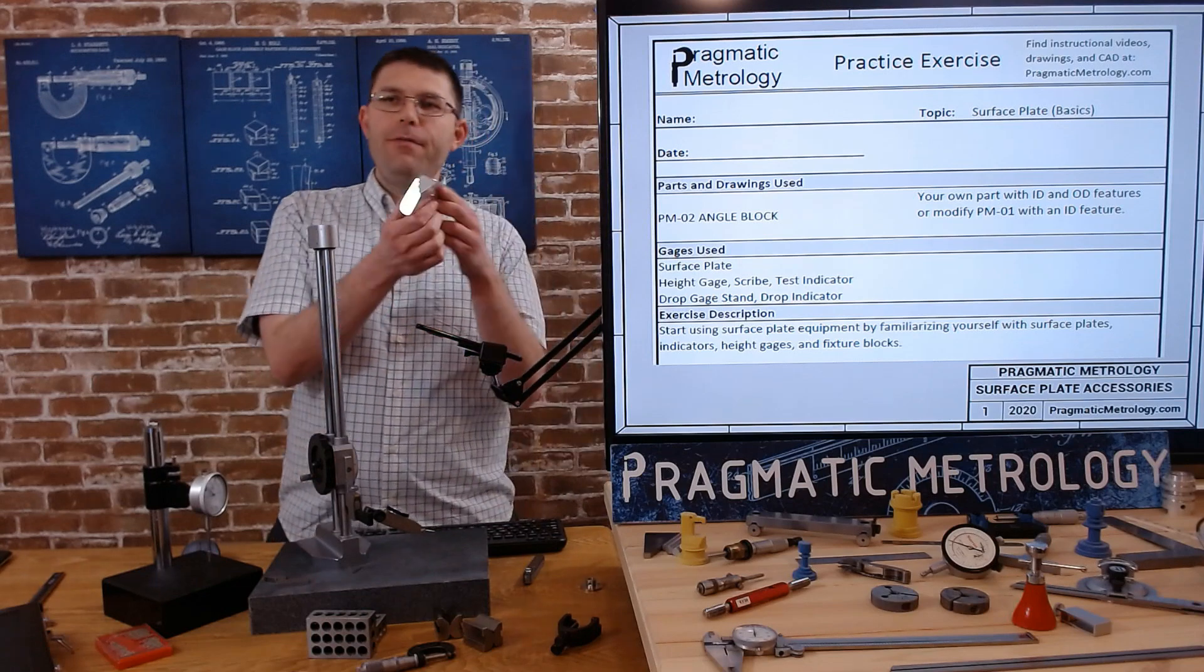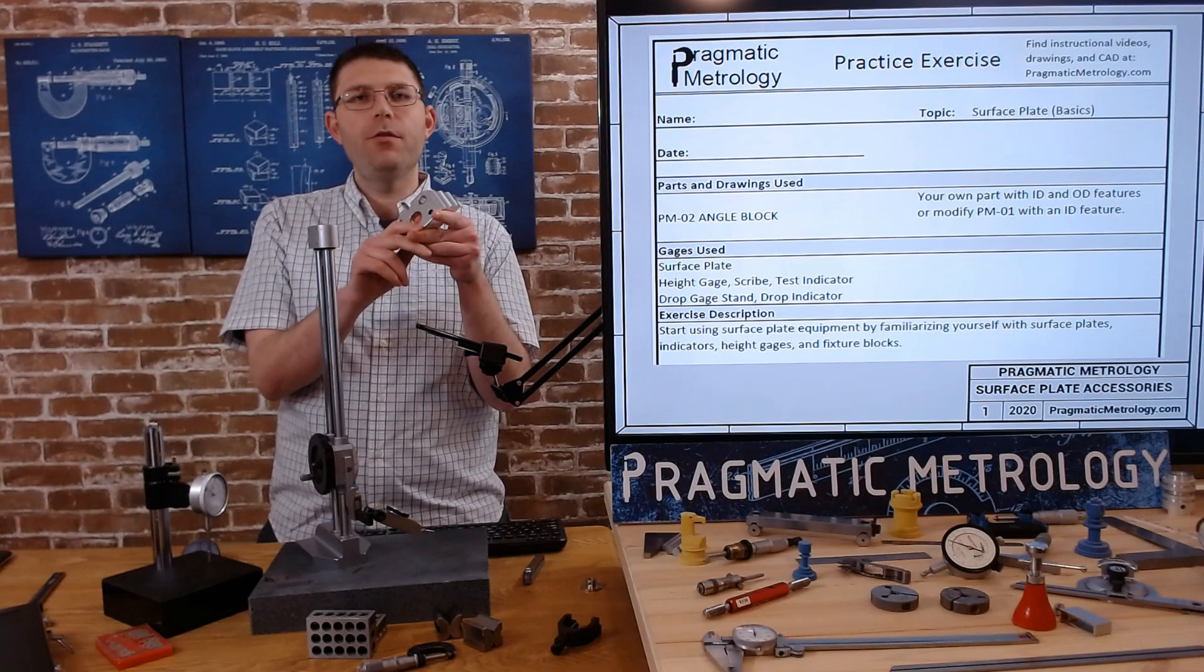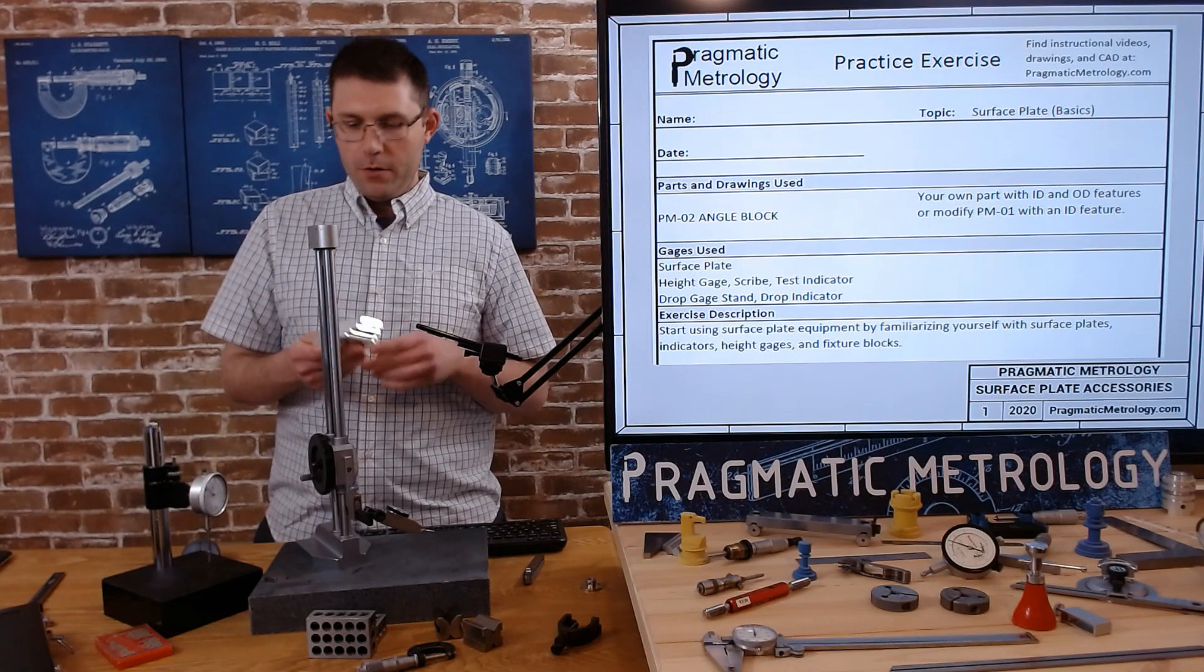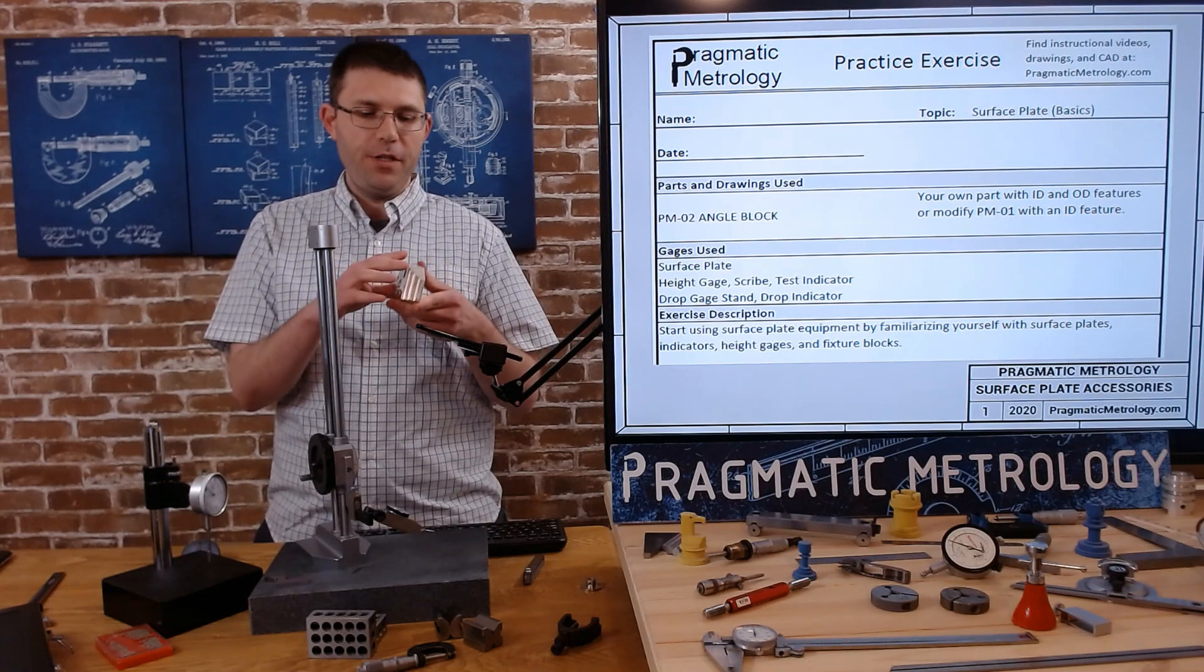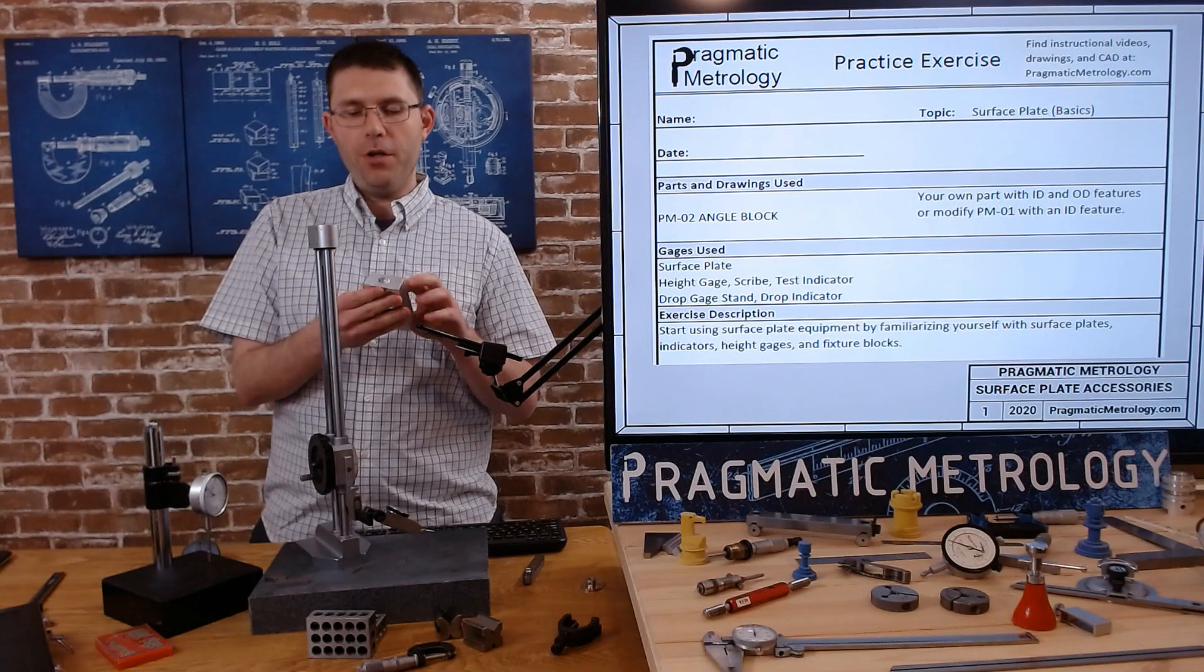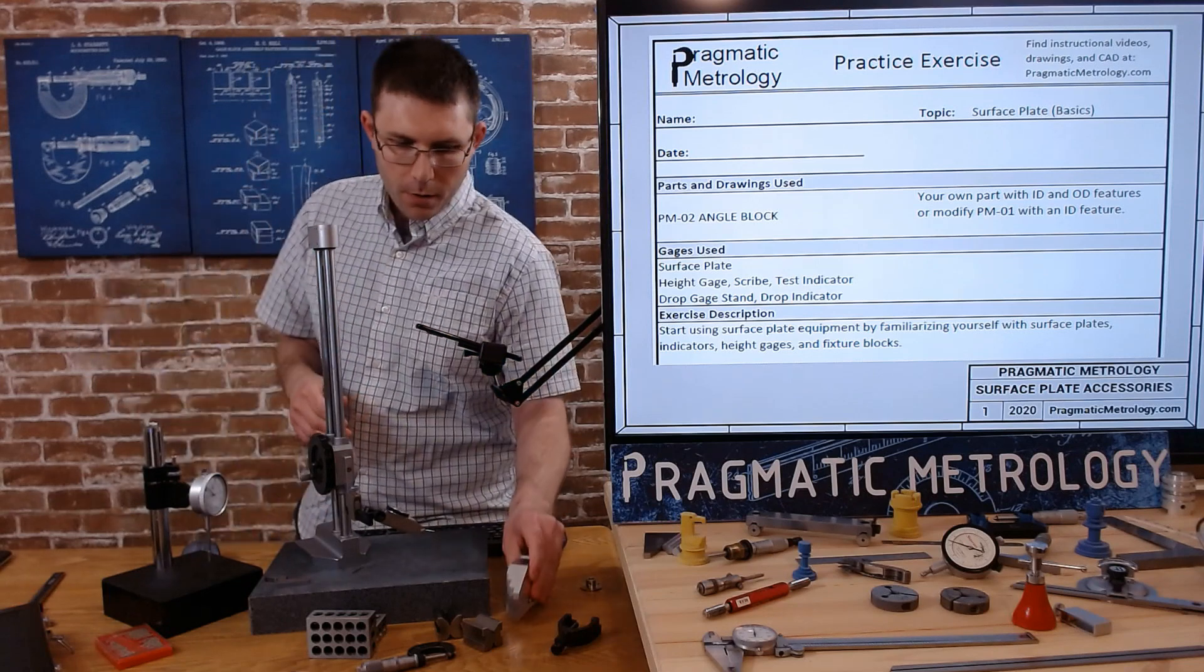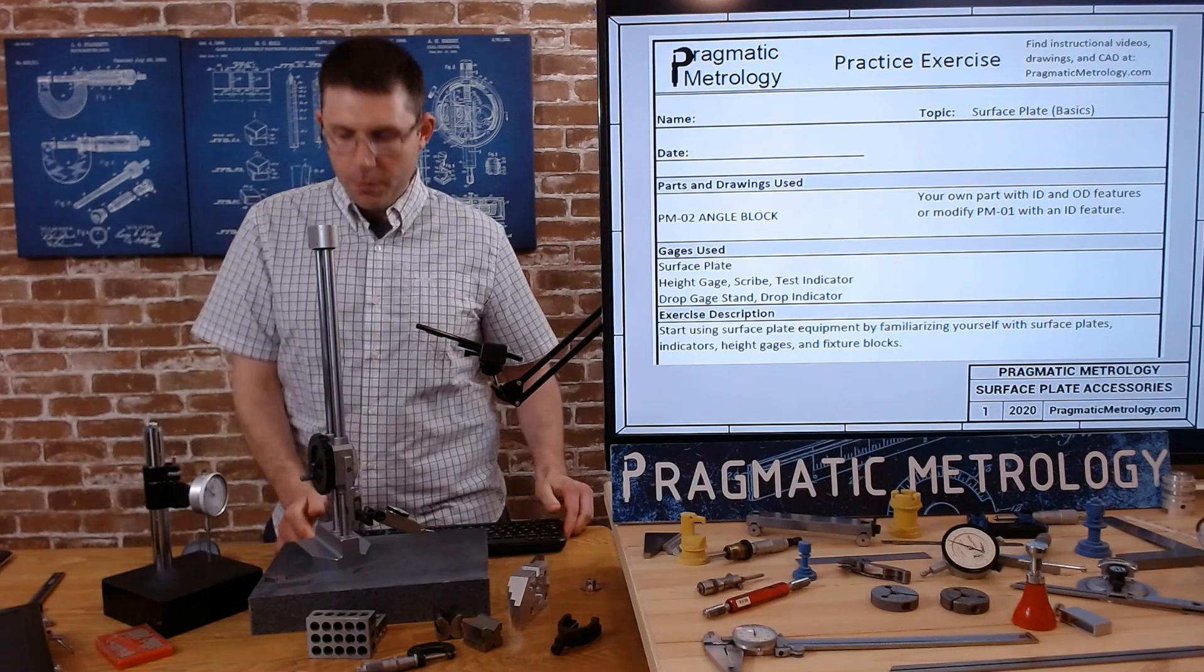So once you have all that we'll get started. If you don't have this part, just grab a part that has maybe some similar features or similar parts that you have access to and prints to go with. So for the surface plate stuff we're going to be interested in some planes, some square features, some step features. We're not really going to be looking at the holes in this video, that will be for the next video.